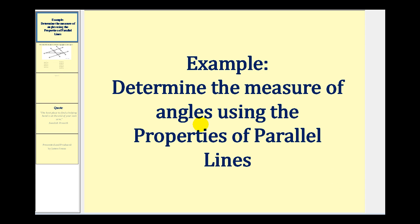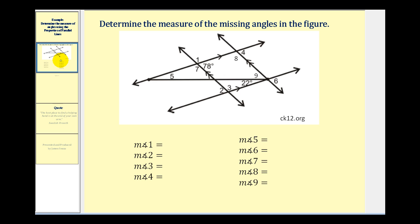Welcome to an example of determining the measure of angles using the properties of parallel lines. Looking at this diagram, we want to determine the measure of angles one through nine. Notice that we have two sets of parallel lines. If we call this line L and this line M, those two lines are parallel. If we call this line P and this line Q, those two lines are parallel.